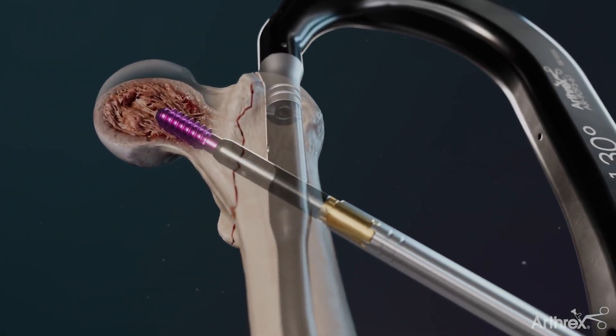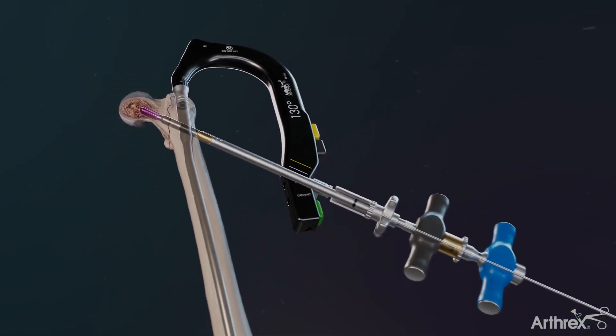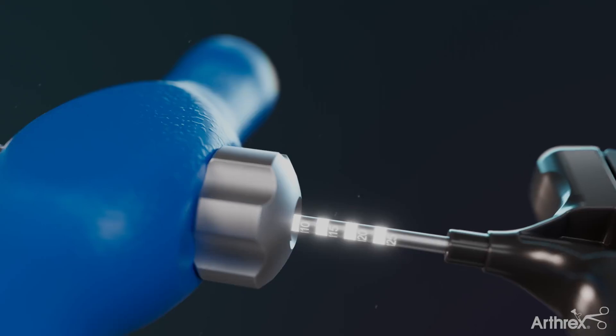Remove the guide pin from the handle and insert the delivery cannula. Measurement markings are present on the delivery cannula that correlate to the multiple lag screw sizes and denote the injection depth.